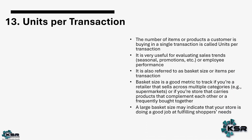The 13th metric is units per transaction — the number of products a customer buys in a single transaction. Also referred to as basket size or items per transaction. More units bought means customers are happy with the product and price. Basket size is a good metric to track if your retailer sells across multiple categories. Larger basket size indicates the business is fulfilling shoppers' needs well.